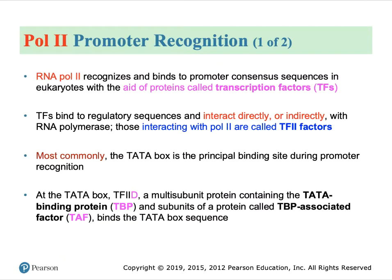Concentrating first on RNA polymerase II and its activity, it is again broken into four stages: promoter recognition, initiation, elongation, and finally termination. We are going to look at all four stages pertaining to this particular class of polymerase molecule.